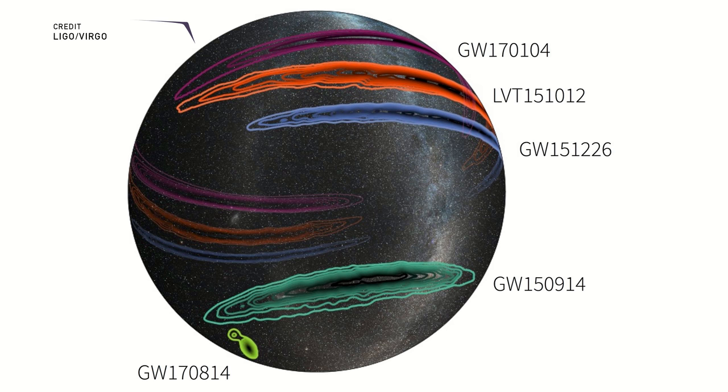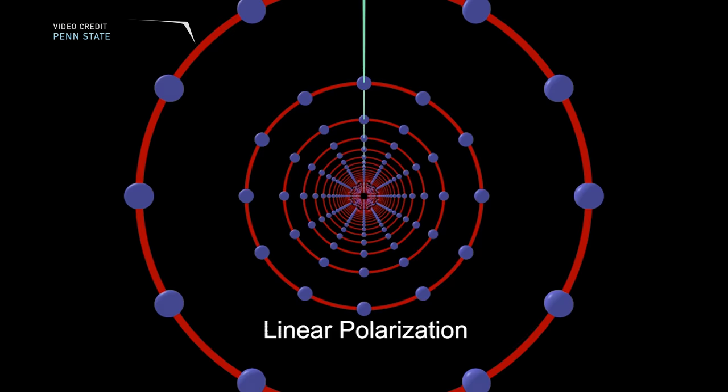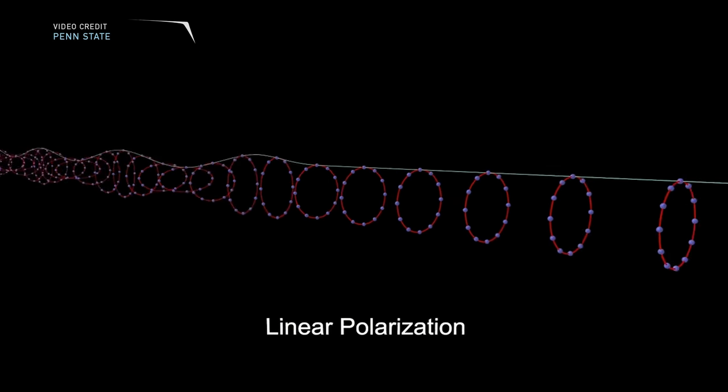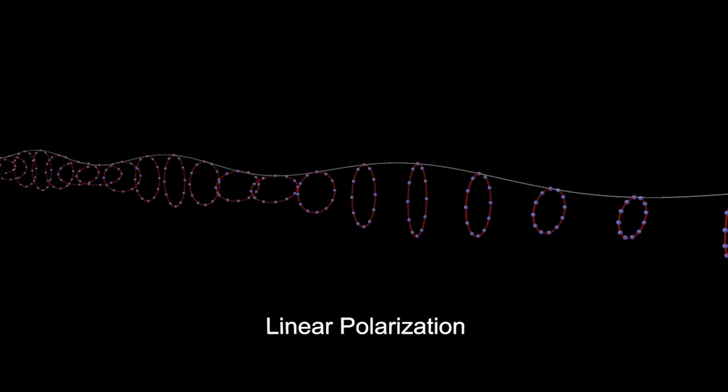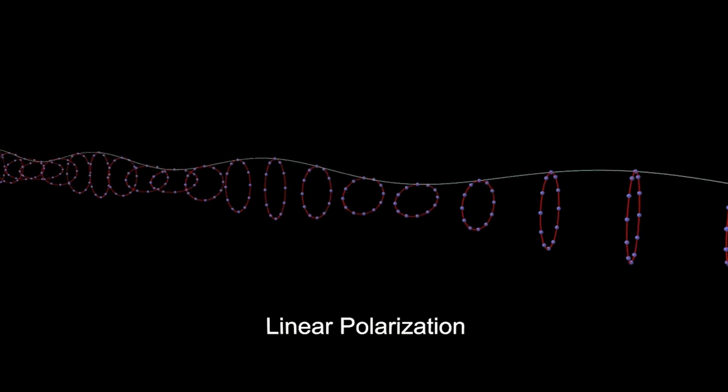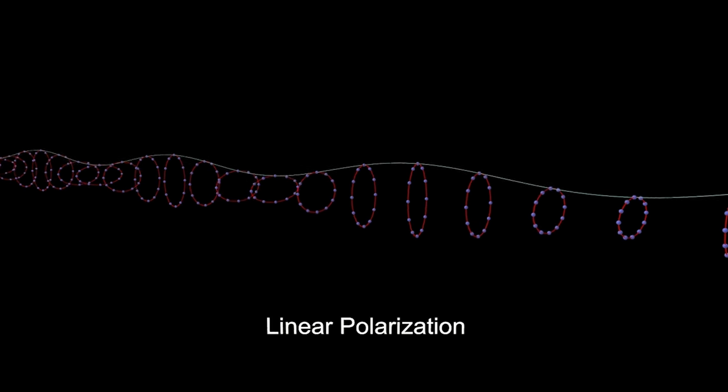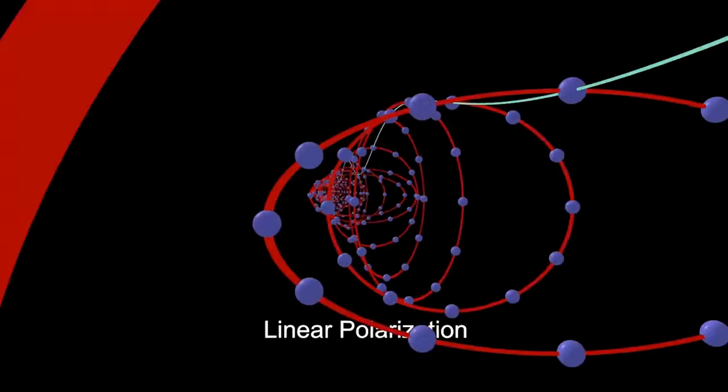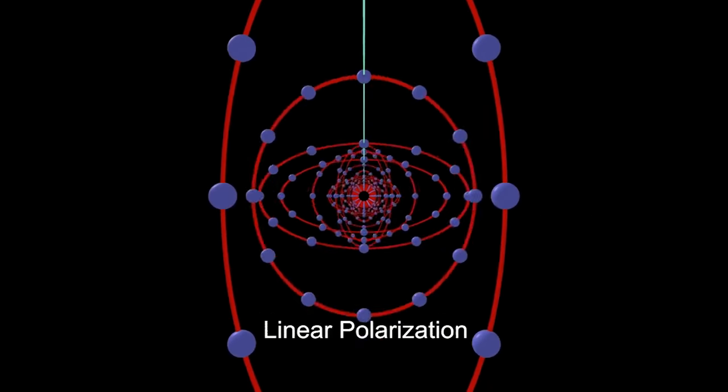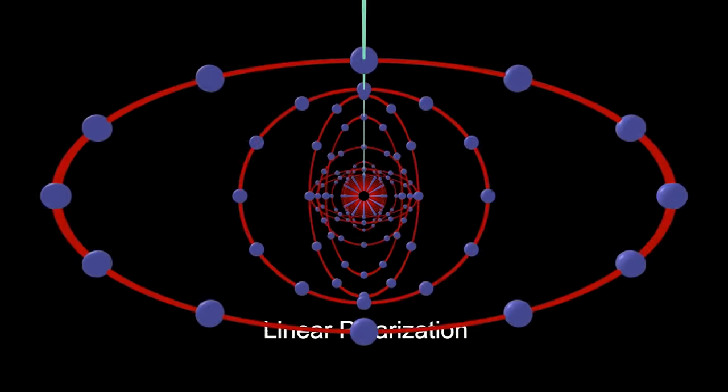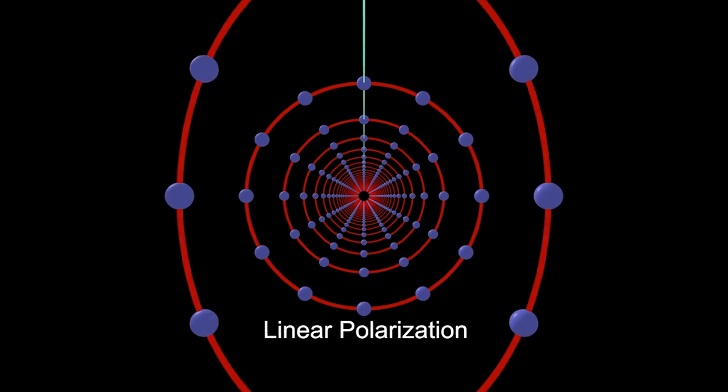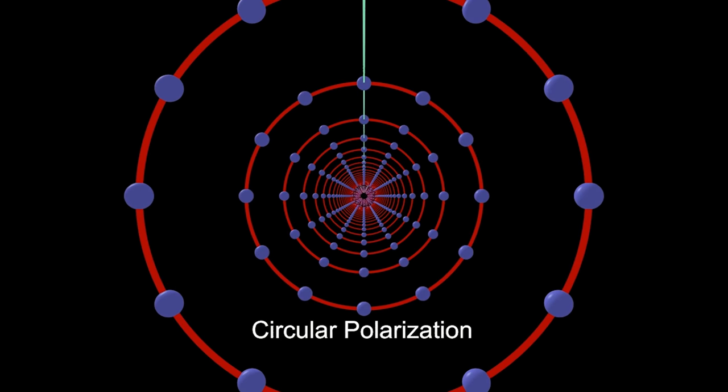So another cool thing that three observation systems allows us to do is actually characterize the polarization of gravitational waves. And to basically break down what is polarization, well basically that's the way the gravitational wave oscillates, and this was the exact type of oscillation that was predicted by Einstein's theory of general relativity.